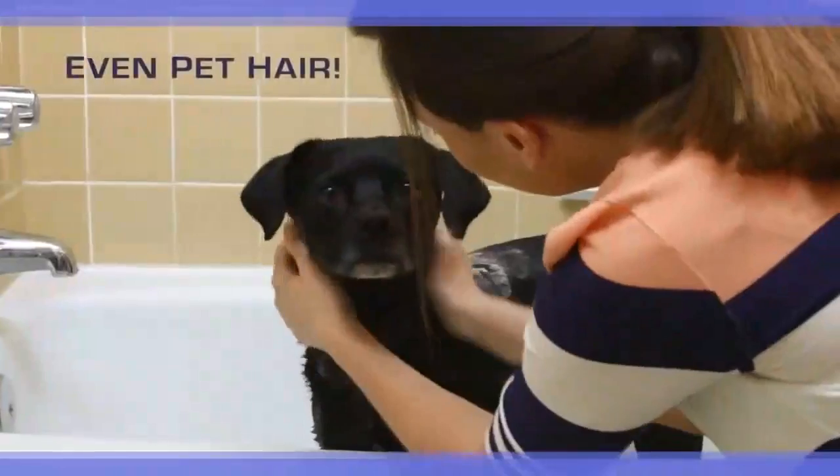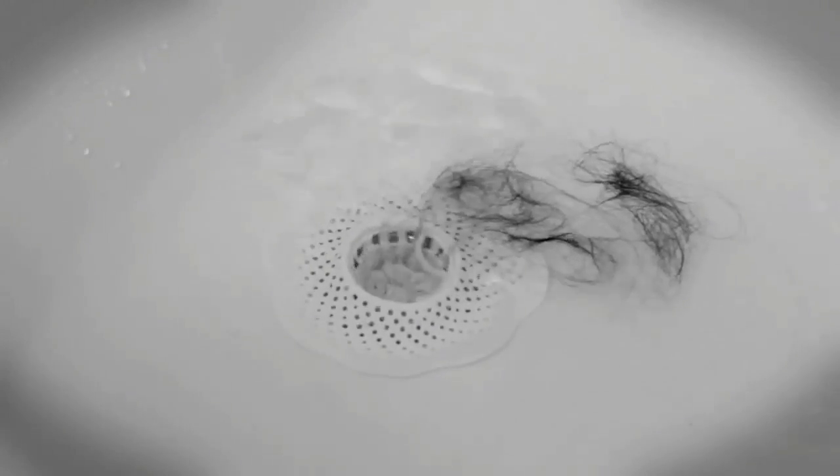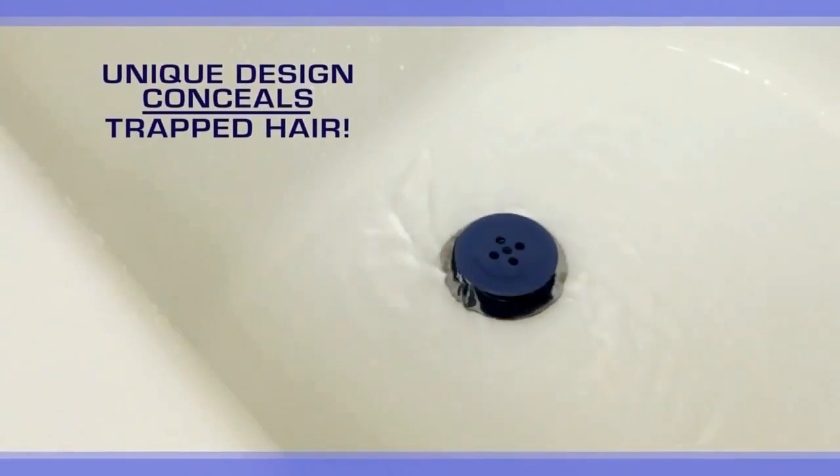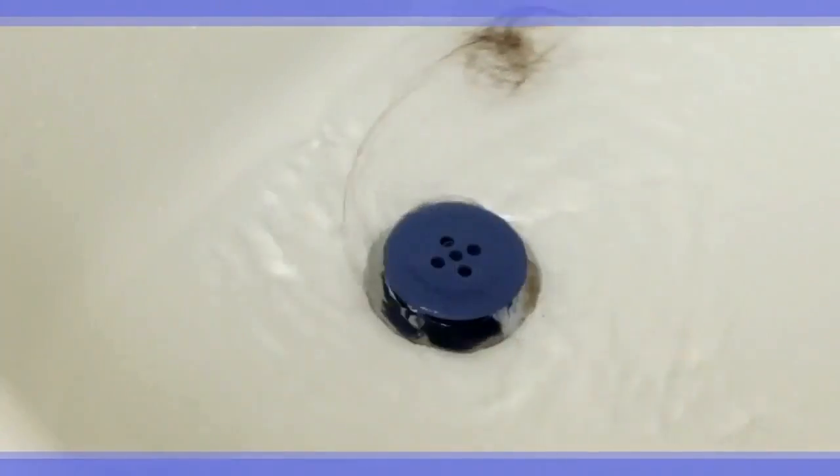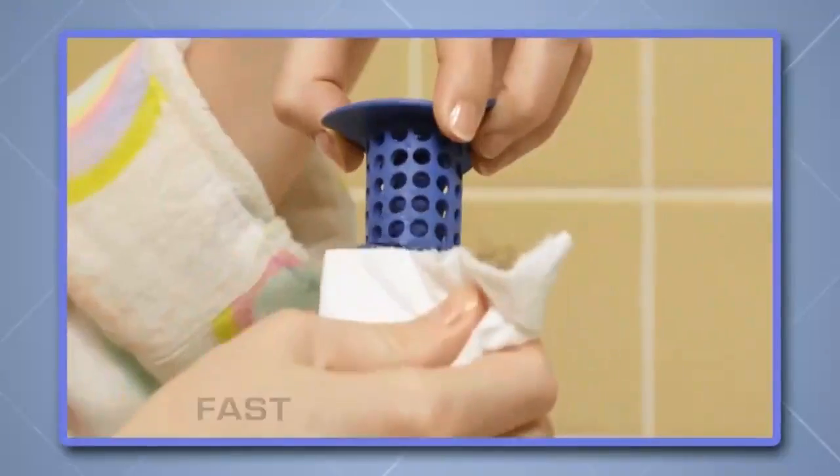And look, other so-called solutions don't catch every hair, and the hair they do catch is on display while you shower and harder to get rid of when you're done. But the TubShroom's unique design conceals trapped hair, water flows freely down the drain, and cleanup is always fast and easy.